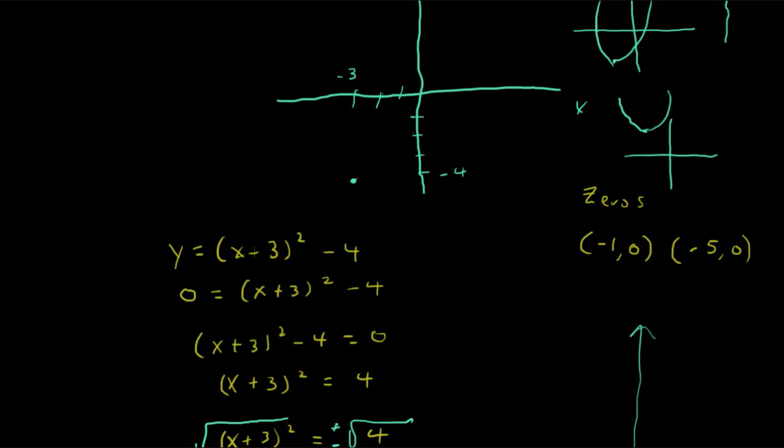That gives us another couple of points to plot. So let's go ahead and plot those two zeros. One is right there, negative 1, 0. And the other one is at negative 5, is right out here, 0. Now we have three points. The negative 1, 0. The vertex. And the other zero, which is negative 5, 0.